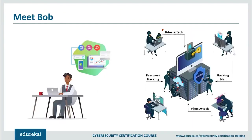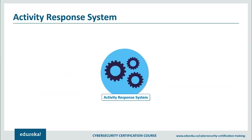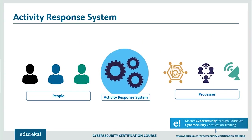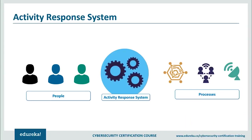Let's go through a scenario to understand how cybersecurity defends an organization against cybercrime. Cybercrime is a global problem — it poses a threat to individual security and an even bigger threat to large companies, banks, and governments. Meet Bob, the chief security officer for a company that makes a mobile app to track finances. Bob's company has an Activity Response Platform (ARP) that automates the entire cybersecurity process, integrating all security and IT software into a single dashboard.